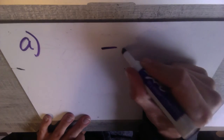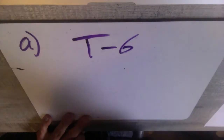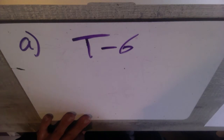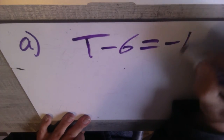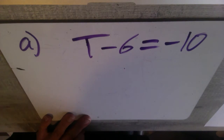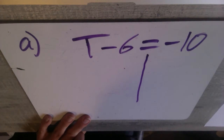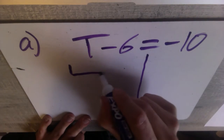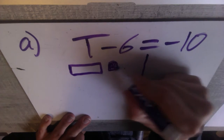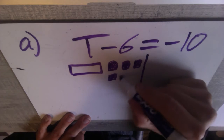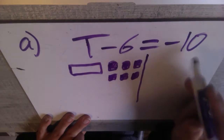So first one in A: overnight the temperature dropped six degrees. So if it's dropping six degrees, that's going to be a subtract six. To represent temperature we'll use T. So the equation is T subtract six equals negative ten degrees Celsius. Draw that line to separate both sides. On the left side we've got our variable T represented with a rectangle, and we have six negative tiles. On the right side we have ten negative tiles.